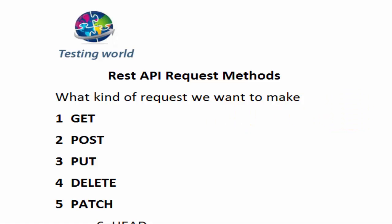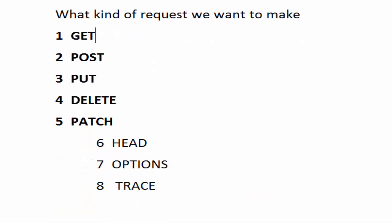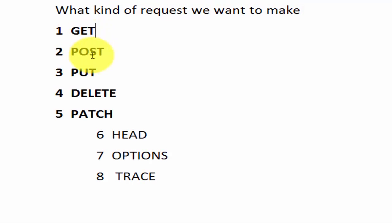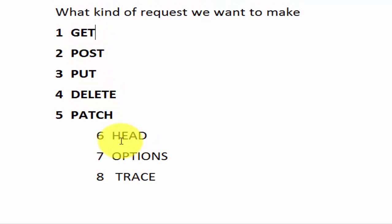We have a few common type methods like GET, POST, PUT, DELETE, and PATCH. And a few more: HEAD, OPTIONS, and TRACE. GET, POST, PUT, DELETE, and PATCH are the ones we are going to use very commonly, while HEAD, OPTIONS, and TRACE are available but used very rarely.